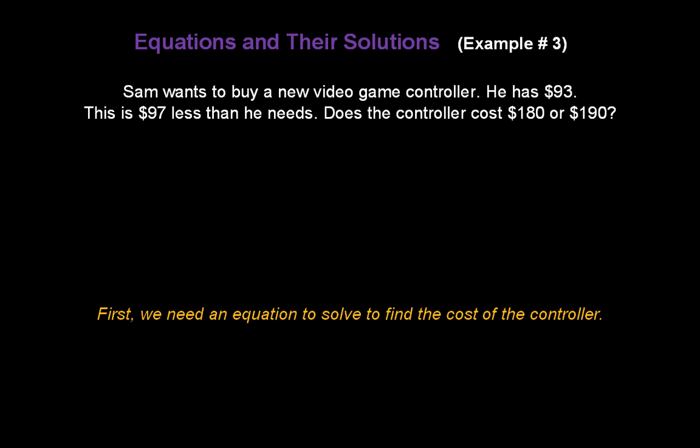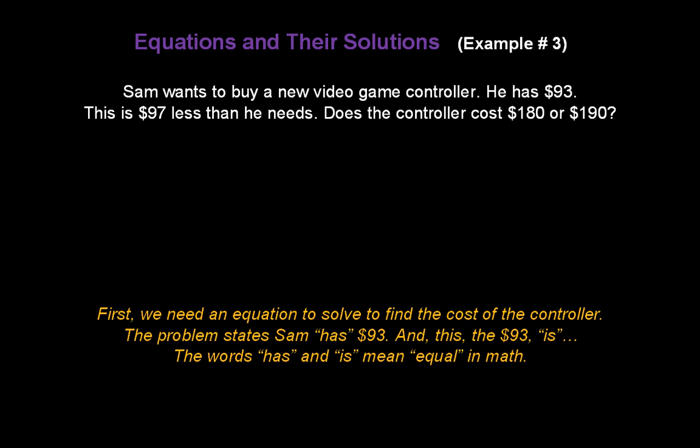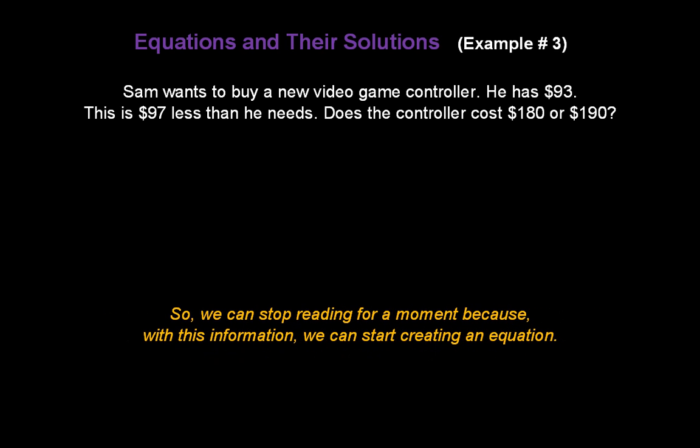First, we need an equation to solve to find the cost of the controller. The problem states Sam has $93 and this, the $93, is. The words has and is mean equal in math. So we can stop reading for a moment because with this information we can start creating our equation. We can start writing 93 equals.